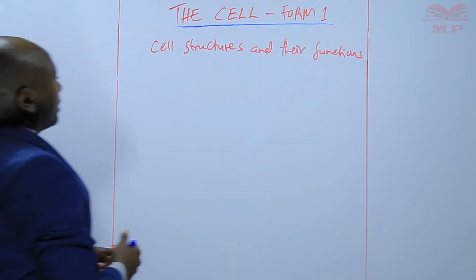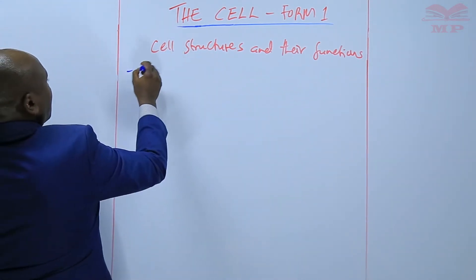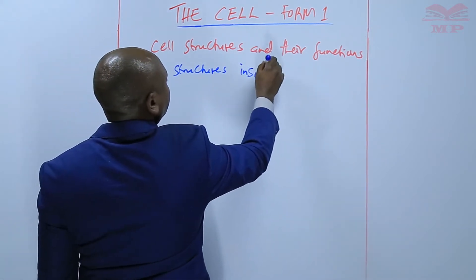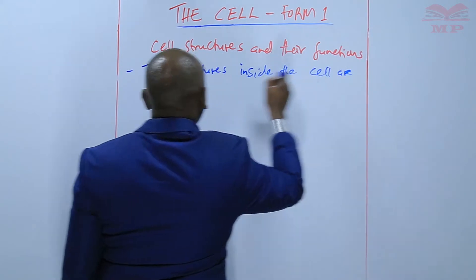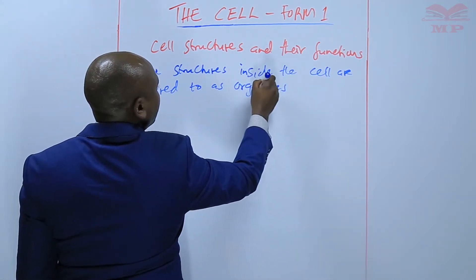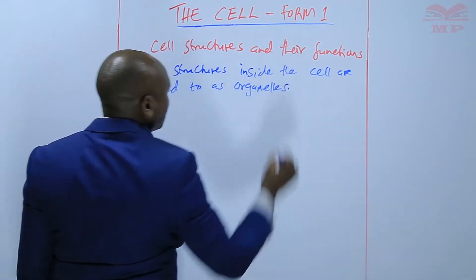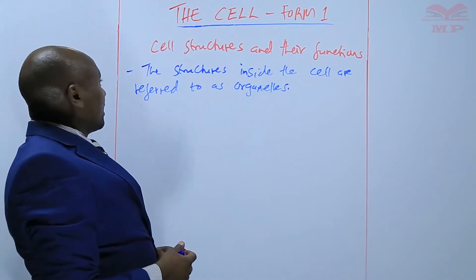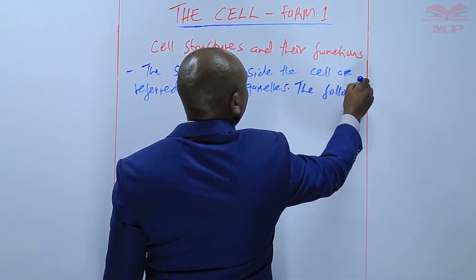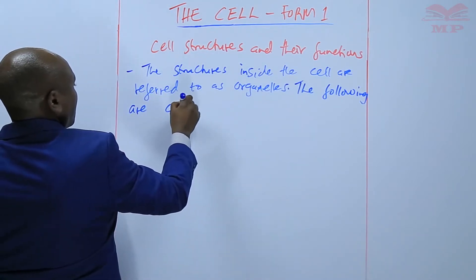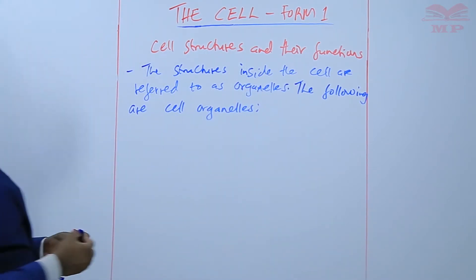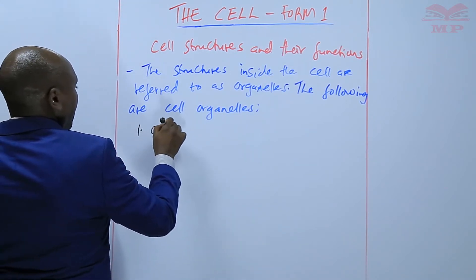The structures inside the cell are referred to as organelles. So we have various organelles within the cell. We are going to look at the following. Number one, we'll start with the cell membrane.